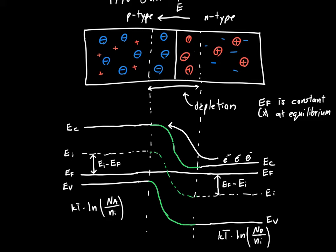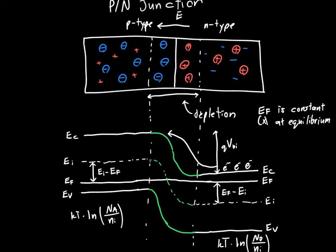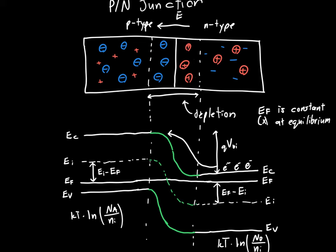they face this big energy barrier. This is what we call the built-in potential, QVBI. And that's exactly like saying there's an electric field that's pushing them back as they try to climb this energy barrier, as they try to go from the N-side to the P-side.